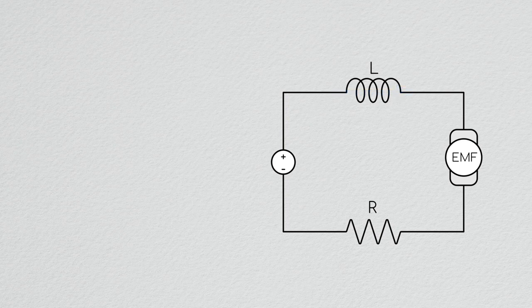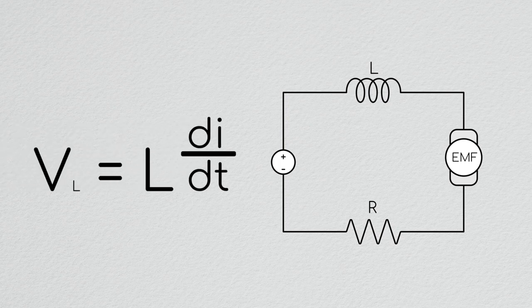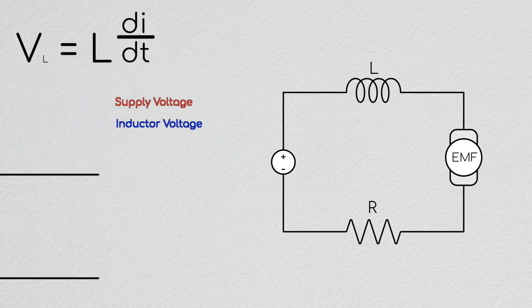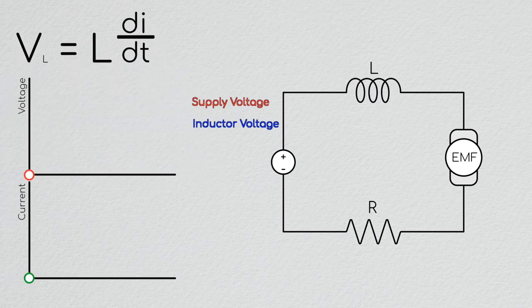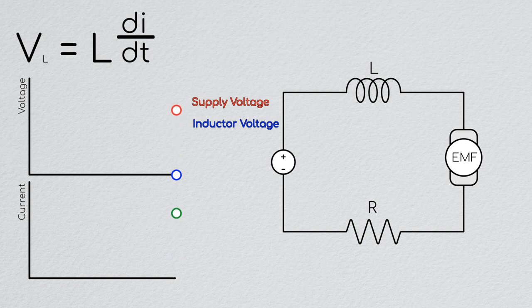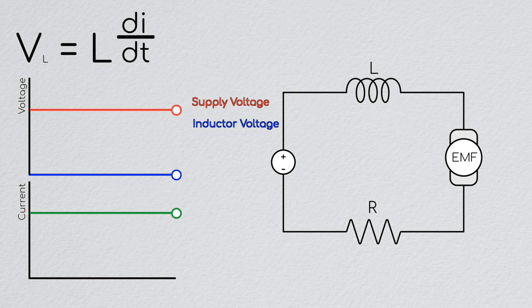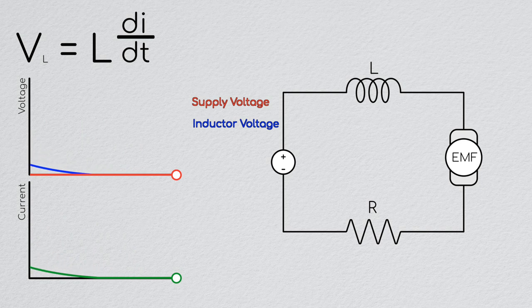Due to the inductor, current running through the system cannot change instantaneously. The voltage across an inductor is proportional to the time rate of change of the current. What this means is that, if the current is changing, the inductor will produce a voltage which will resist that change. So if the external voltage was high, then suddenly switches off, the inductor will produce a voltage in the same direction that the external voltage had been so that the current cannot drop to zero instantly.